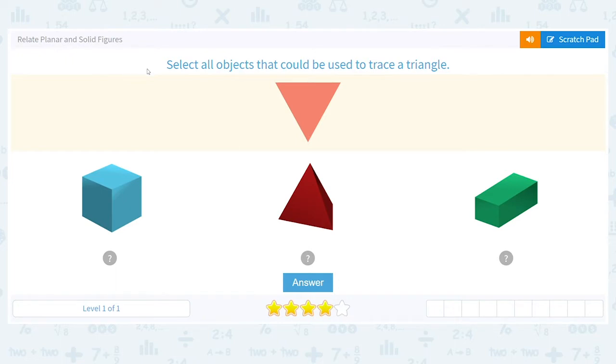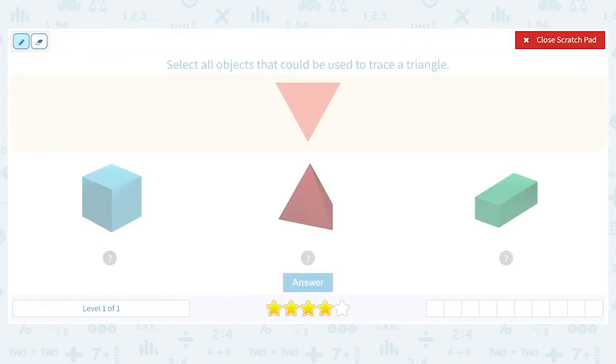So the directions say select all the objects that could be used to trace a triangle. I have a triangle here. The triangle can go the other way too.